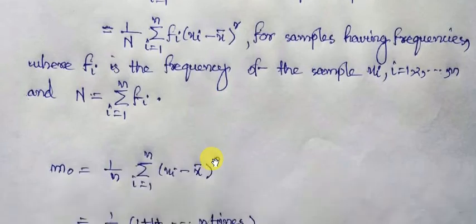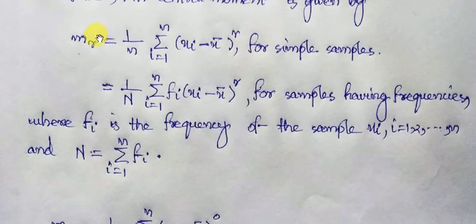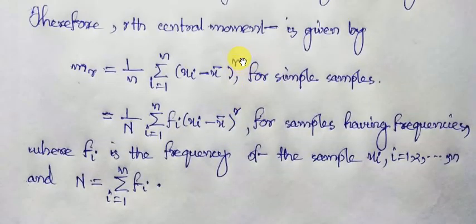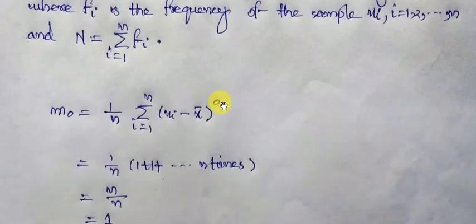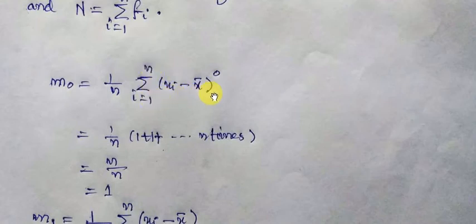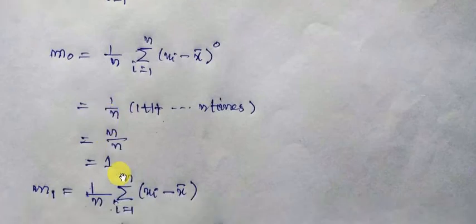We shall now write down specific central moments by restricting the subscript r to specific values. The 0th central moment, m₀, equals (1/n) summation over i=1 to n of (xᵢ − x̄)⁰. Since any quantity to the power 0 equals 1, this becomes (1/n) times the sum of 1 taken n times, which is (1/n)·n = 1. So the 0th central moment equals 1.